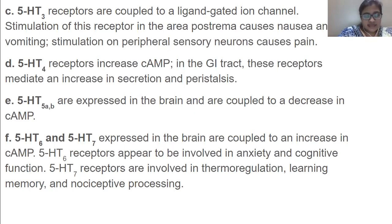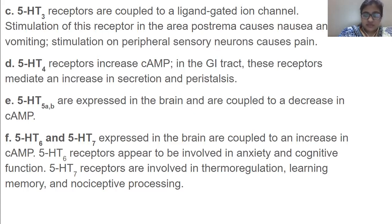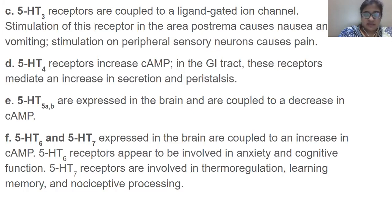5-HT6 and 5-HT7 receptors are expressed in the brain and are coupled to an increase in cAMP level. 5-HT6 receptors appear to be involved in anxiety and cognitive function. 5-HT7 receptors are linked to thermoregulation, learning and memory, and nociceptive processing — nociceptive being related to pain processing.